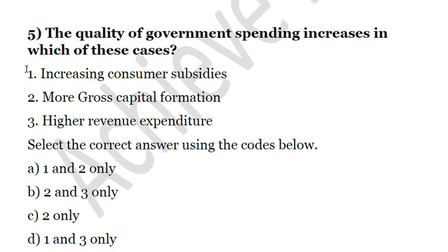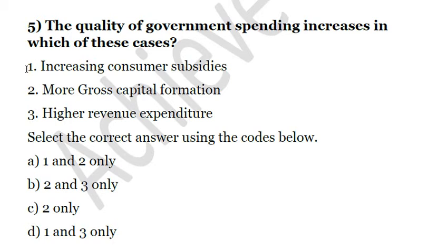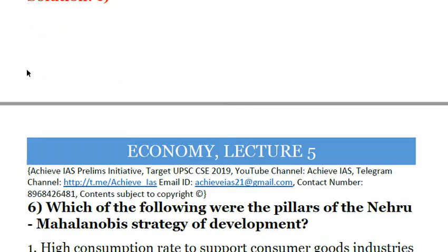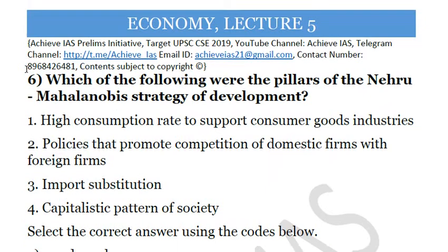Question 4 — The quality of government spending increases in which of these cases: First, increasing consumer subsidies; second, more gross capital formation; third, higher revenue expenditure? The answer is second — more gross capital formation — because it leads to enhanced capital formation, enhanced production, and enhanced growth. Answer: C, second only.